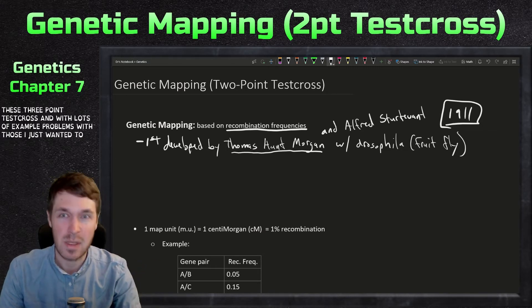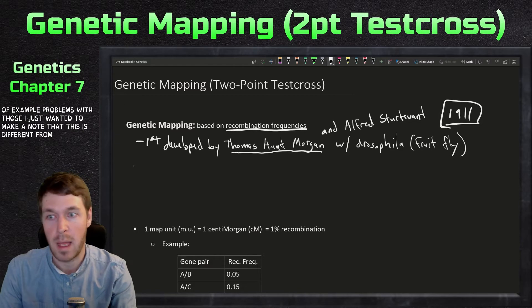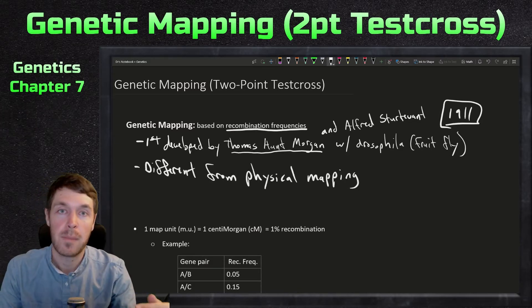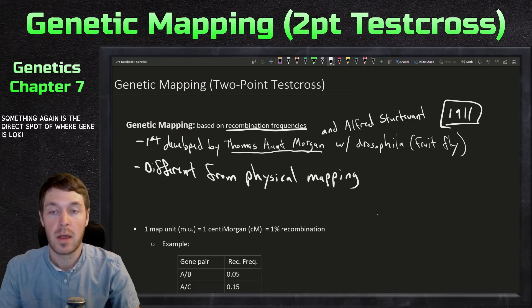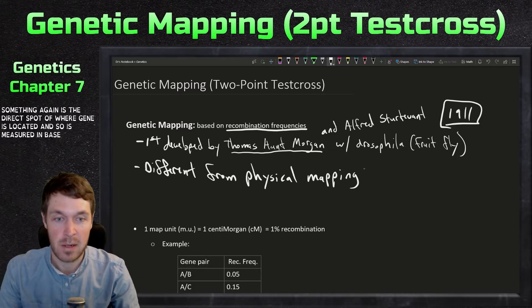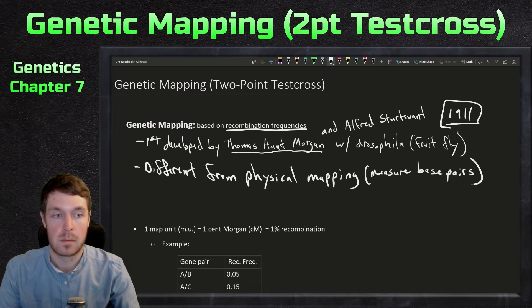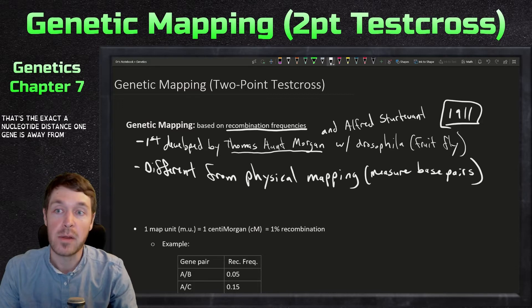I just wanted to make a note that this is different from physical mapping. Physical mapping is the direct spot of where a gene is located, and it's measured in base pairs. That's the exact nucleotide distance one gene is away from the other.